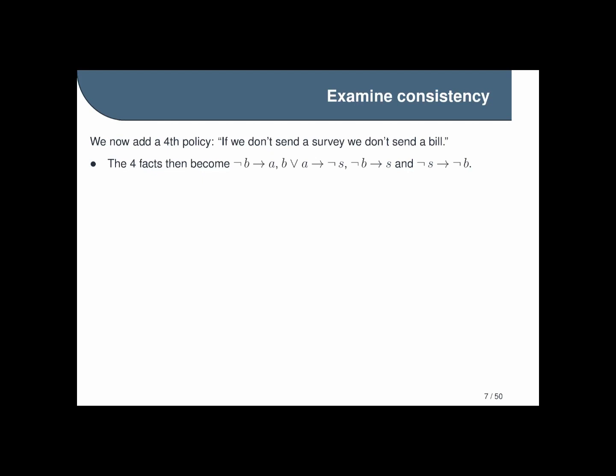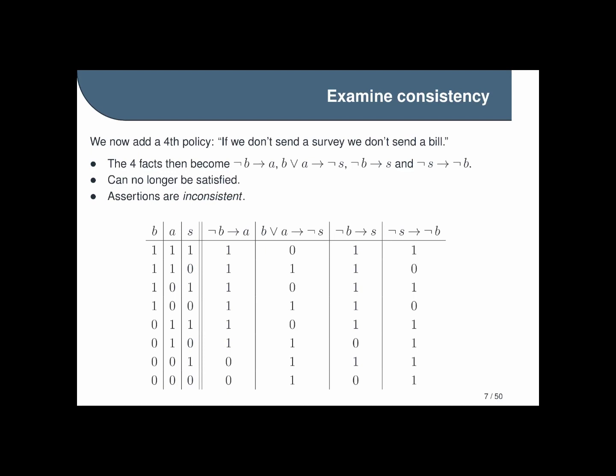All together these statements form a set that can't be satisfied at all. What that means is there is no assignment that makes them all true at the same time and so we say these assertions are inconsistent. To see what I mean by this we can again take a look at the truth table.